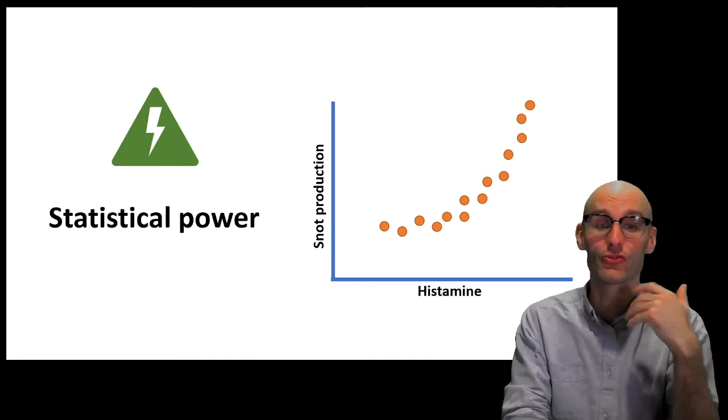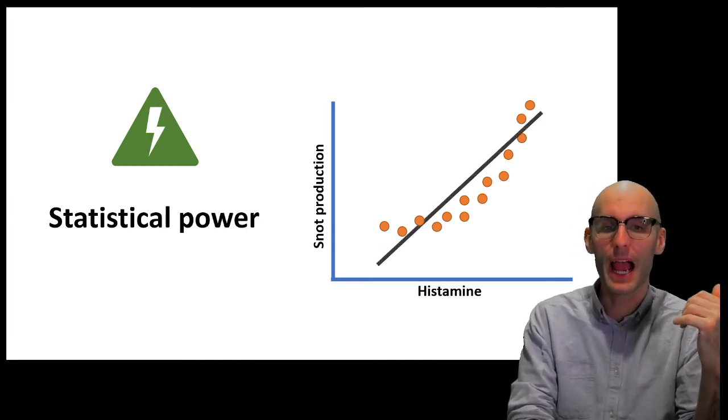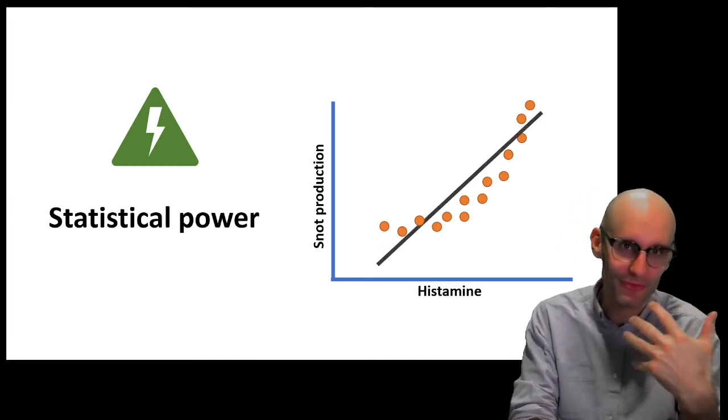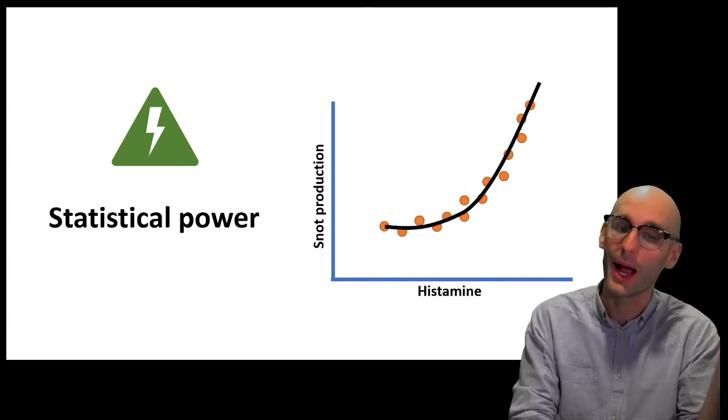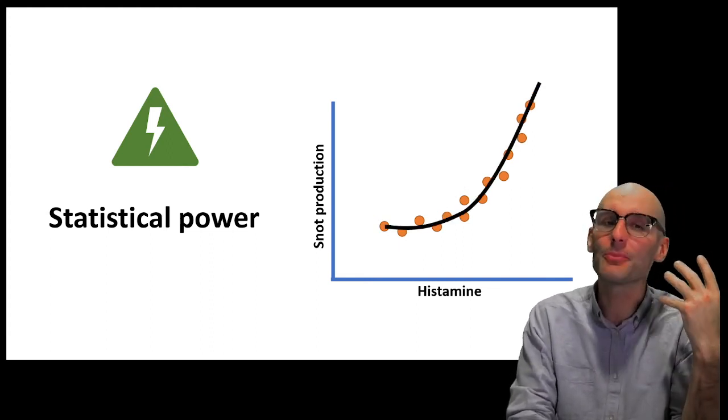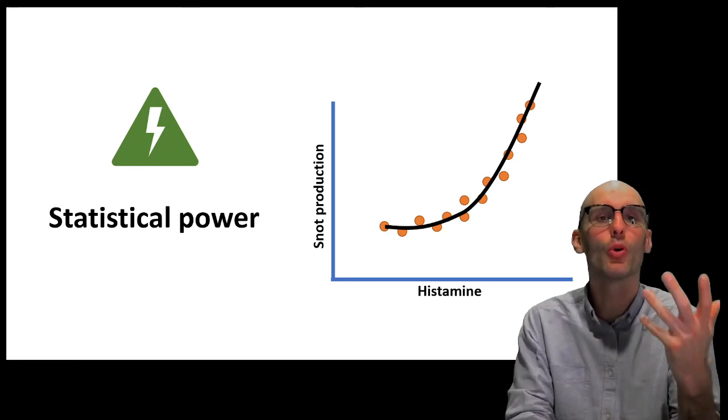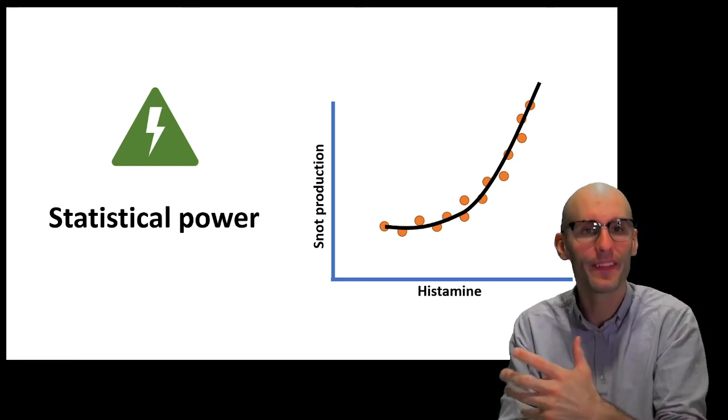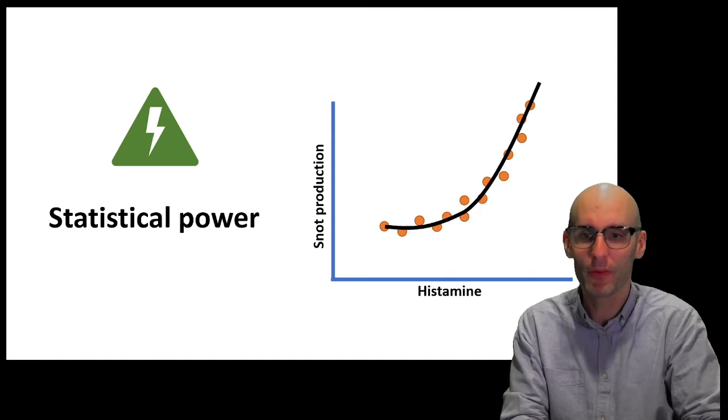Now, if we had a greater n, now we can see that the linear regression doesn't really fit it, but the quadratic fits it quite well. So, now it seems worth choosing the more complicated model over the less complicated model.